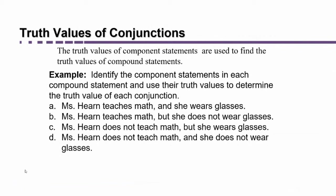Hi, I'm Ms. Hearn. Let's get started. Conjunction just means things that are joined with the word 'and' or a word that's equivalent to 'and.' One of the things we're going to need to do is determine if statements that have been joined with the word 'and' to form a compound statement are actually true or false. These statements that are joined together are called component statements, and we're going to identify the component statements in each compound statement and use their truth values to determine the truth value of the conjunction.